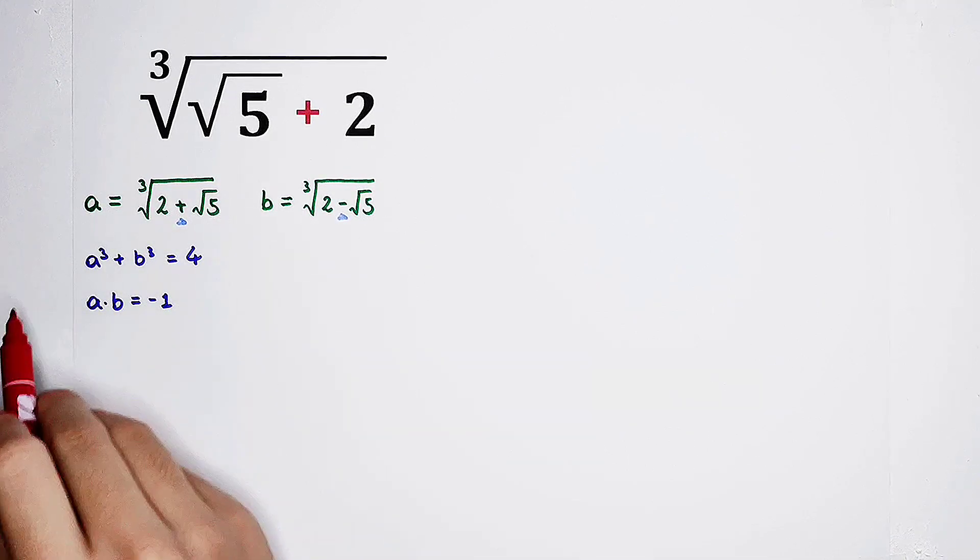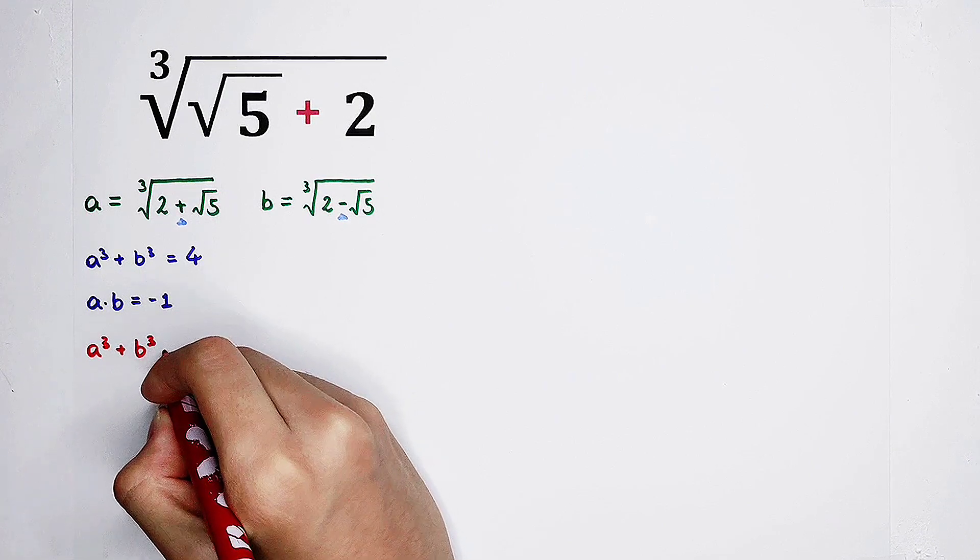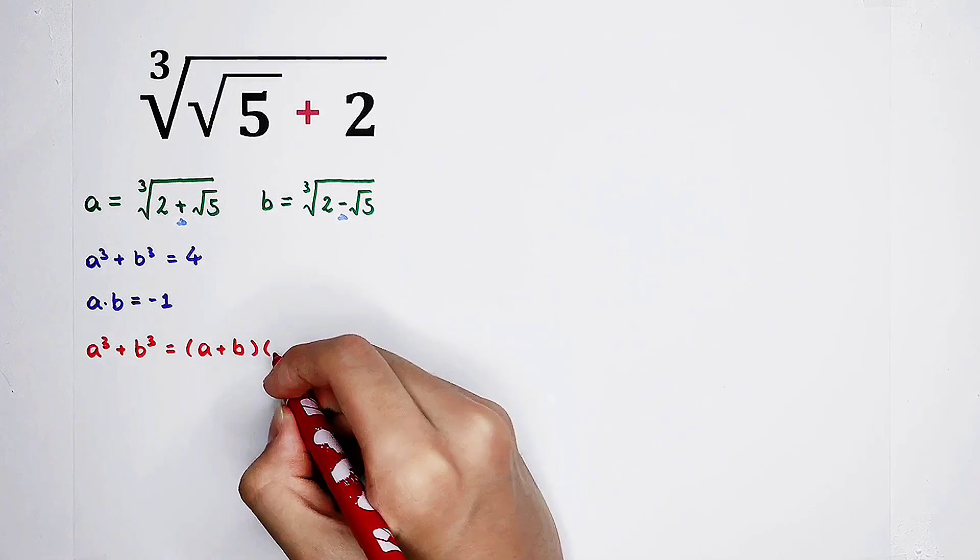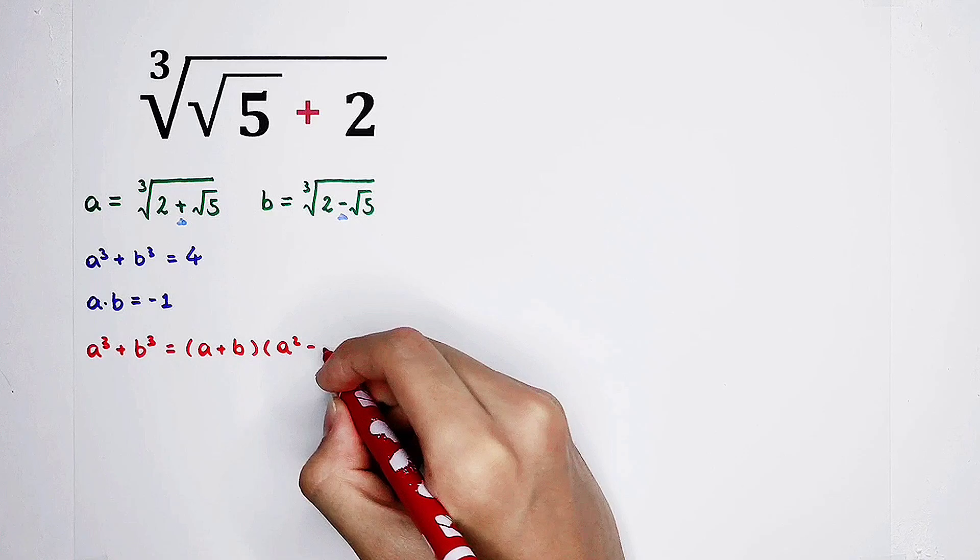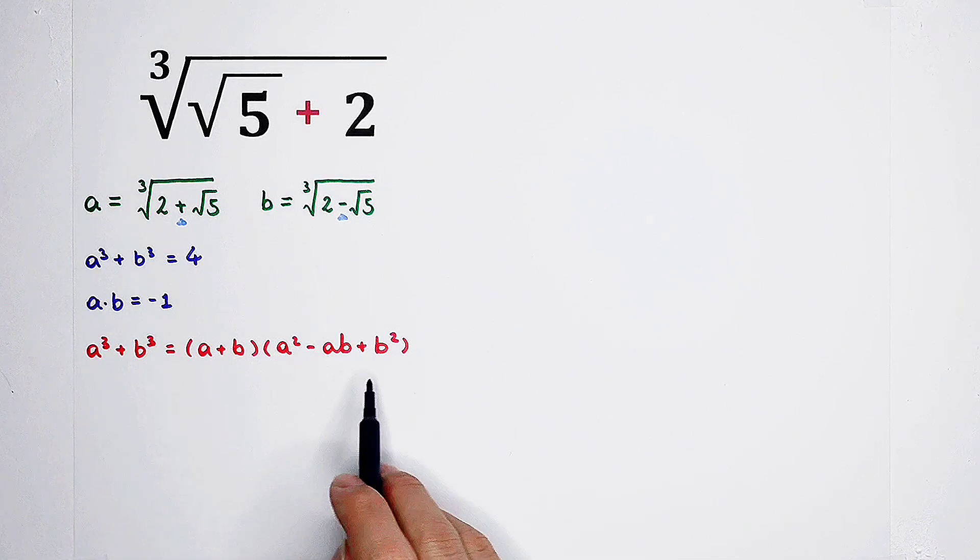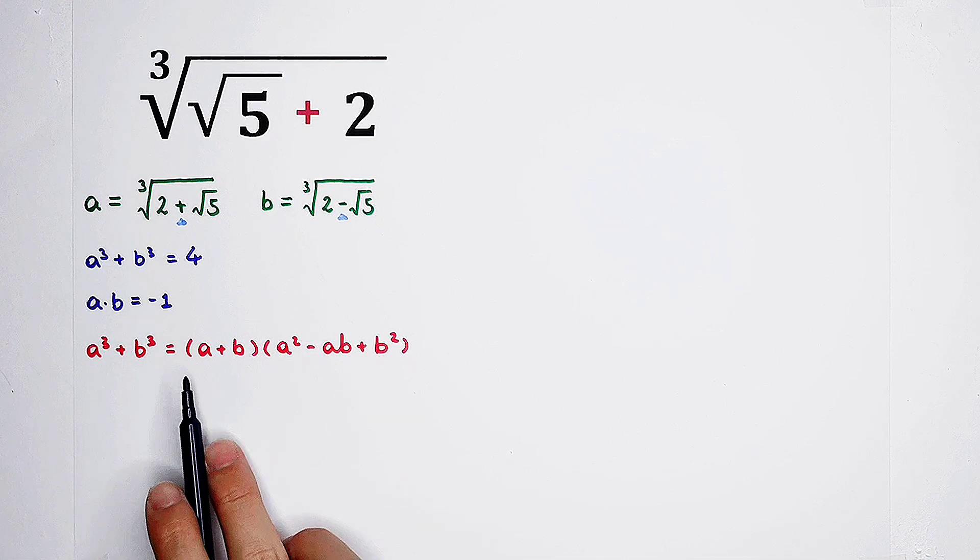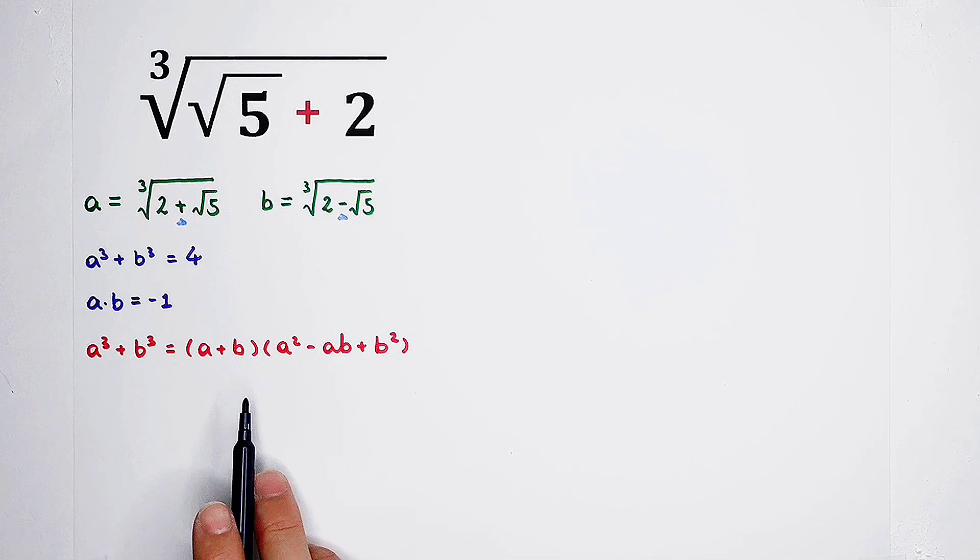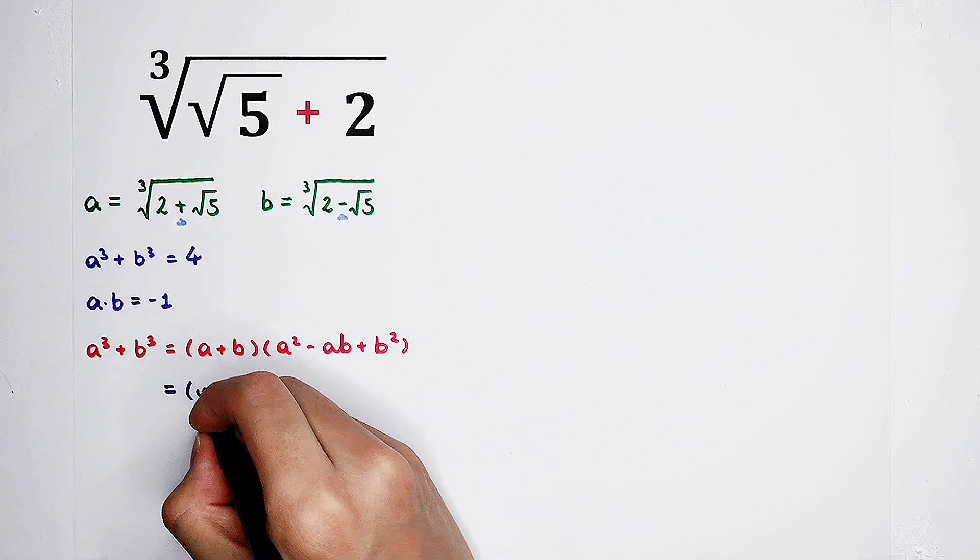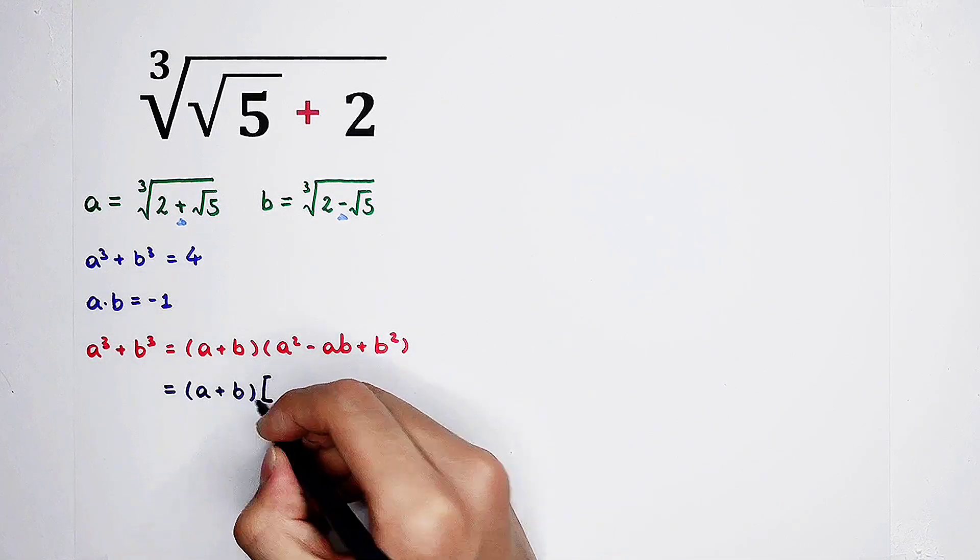Now we should focus on the left-hand side of the first equation. A cubed plus b cubed is a plus b and then times factorization: a squared minus ab plus b squared. A squared plus b squared, we don't know the value of it. We only know that a times b is negative 1. We don't know the value of a plus b either. So what can we do? Now we can transform this term, which is the second bracket.